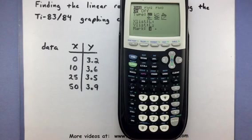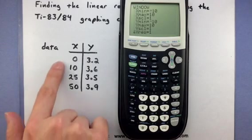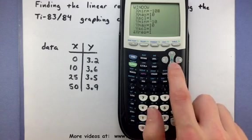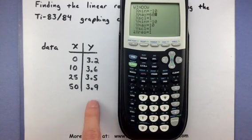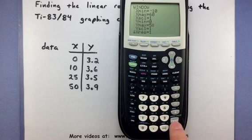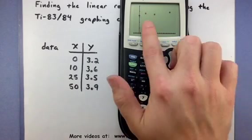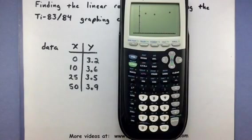Now let's adjust our window so that it displays our data properly. I'm going to choose between negative 10 and 60 so I can see all of my X values, and I'll choose Y values between 0 and 5. Let's go ahead and press GRAPH to see what this data looks like. Perfect. Now I want to form a best fit line through these data points.